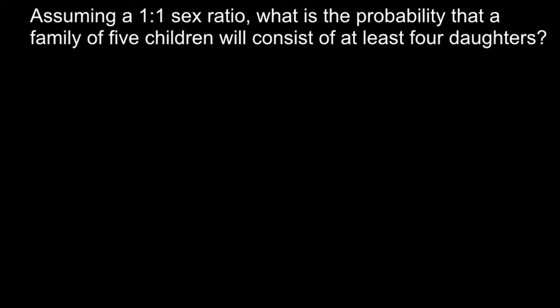Hi, this video is going to be about the law of probability and genetics. Here is a problem: assuming a one-to-one sex ratio, what is the probability that a family of five children will consist of at least four daughters? If you know how to solve this problem, I recommend you stop the video here, try to solve it on your own, and when you are ready you can run the video again and compare your answer with my answer and explanation.